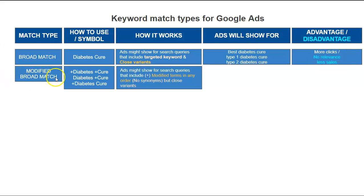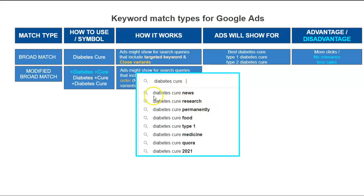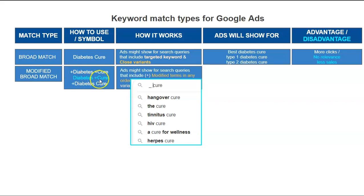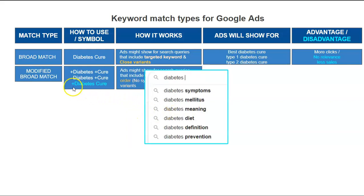Broad match modifier, or modified broad match, is very important to understand. When you use modified broad match, you add a plus symbol in front of the keywords — like +diabetes +cure. For example, using +cure means your ad will trigger for keywords like 'diabetes cure news,' 'diabetes cure research,' 'permanent diabetes cure,' or 'diabetes cured food.' If you only add the plus on 'cure' but not 'diabetes,' your ad will trigger for anything related to cure — like 'hangover cure,' 'HIV cure,' 'cure for wellness,' and so on.